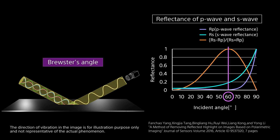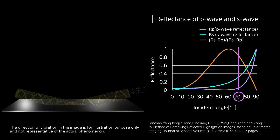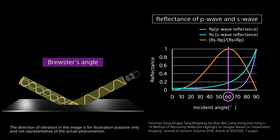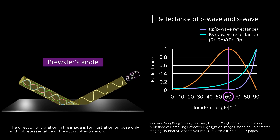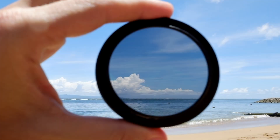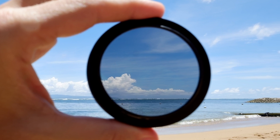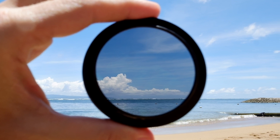The angle at which we can achieve the highest degree of polarisation is called Brewster's Angle. This varies depending on materials, but for most it is 60 degrees. When the light source is unpolarised, it is important to set the camera angle at Brewster's Angle to get the optimised information. On the other hand, if using a polarised light source, then you will have far greater flexibility.